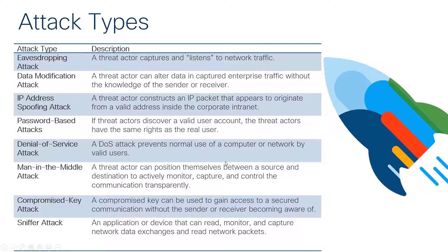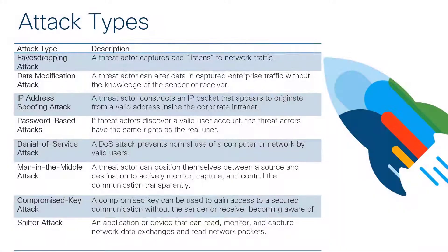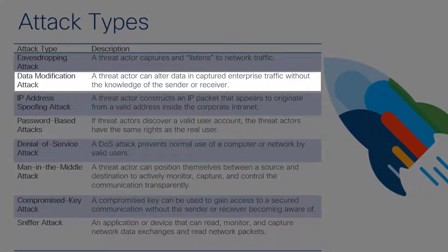Now let's look at the attack types threat actors use. With eavesdropping attacks, using a tool like Wireshark, a threat actor can capture network traffic and listen to it, even saving the capture to study later. With data modification, it goes one step further — the threat actor not only captures data but actually alters it without the sender or receiver knowing.